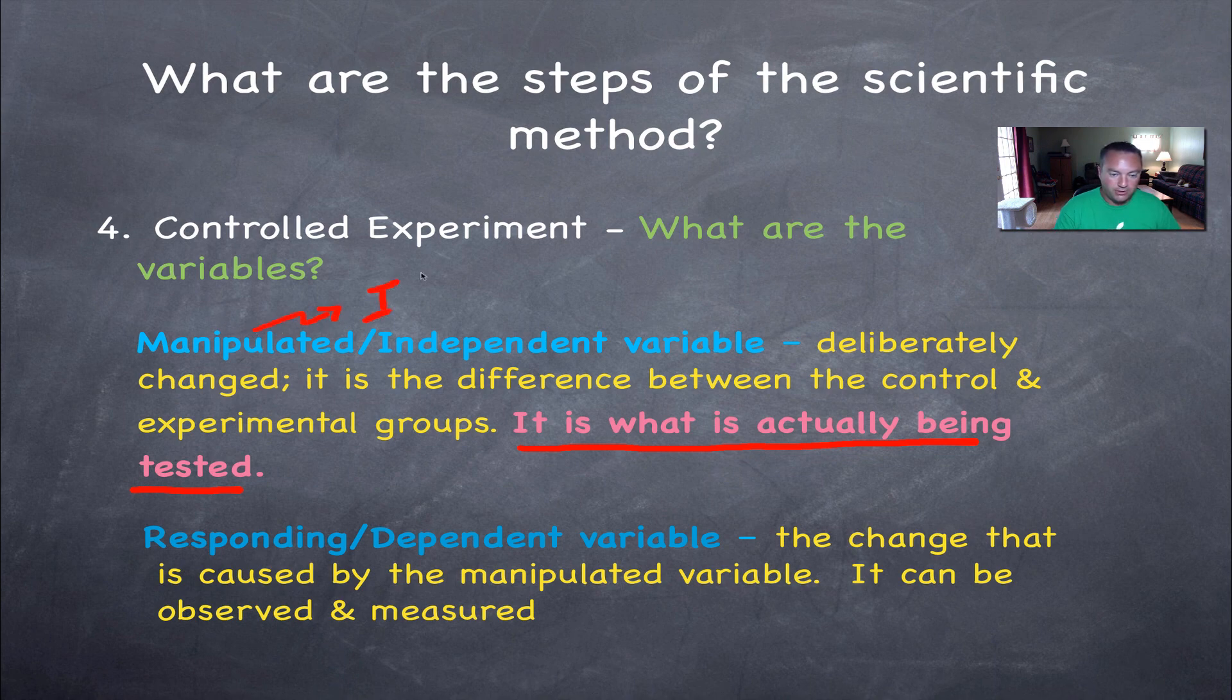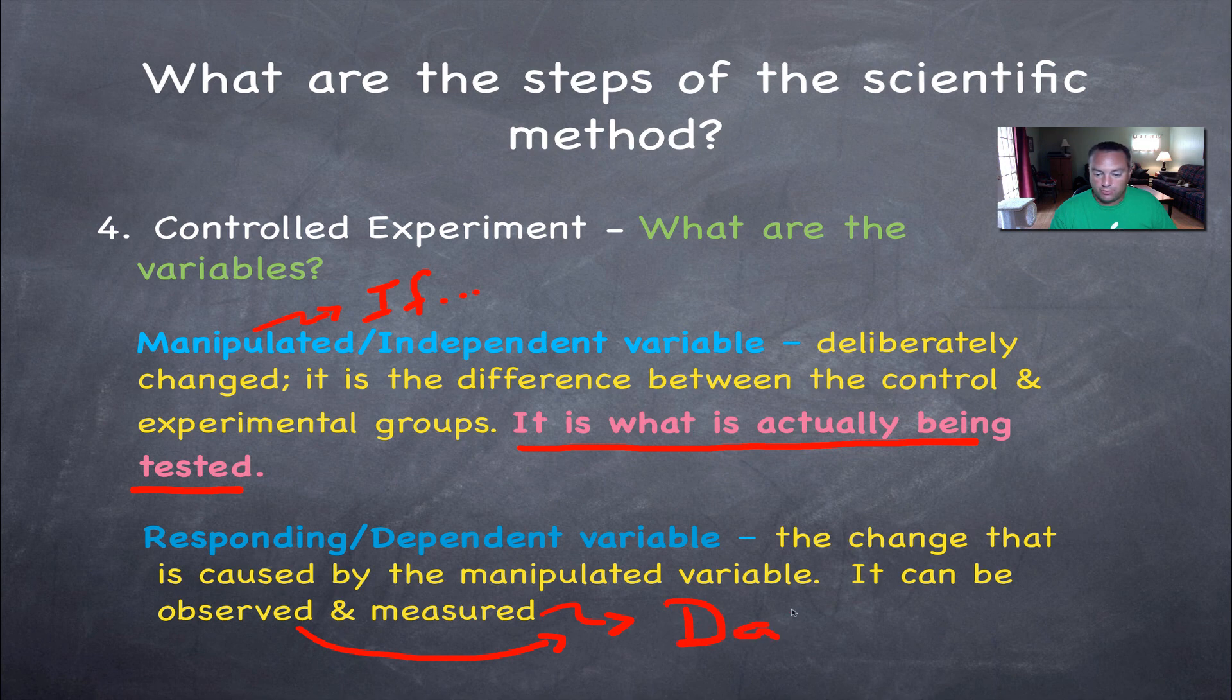Remember, this refers to the if part of your hypothesis. Now the responding variable is what's going to happen when you apply the manipulated variable. Now this will be the change that you can see. It's going to be observed and measured. Now when you see these words observed and especially measured, you need to think of the word data. So the manipulated variable is what is actually being tested. The responding variable is what you can measure or observe based upon that manipulated variable. And essentially you're going to collect the data.